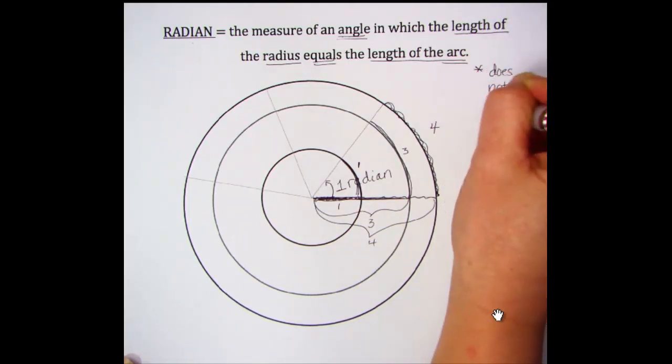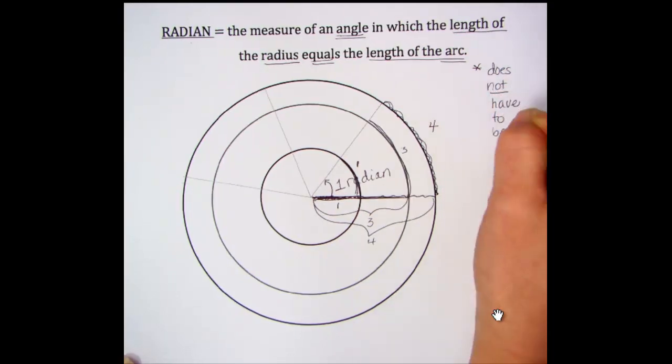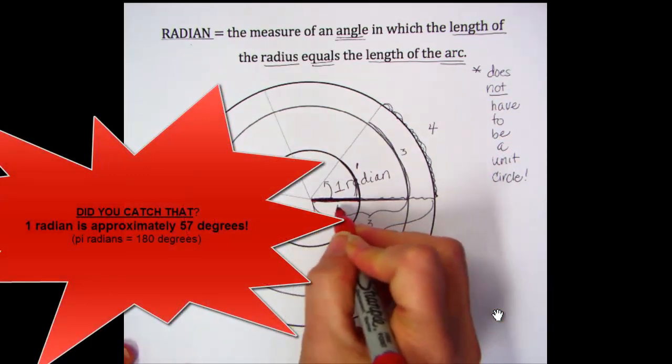Most of the time in our trig, we have pi attached to our radian measure, like 180 degrees is pi radians. But one radian is approximately 57 degrees, and you don't have to be on a unit circle.